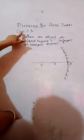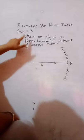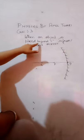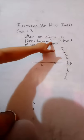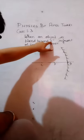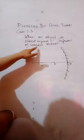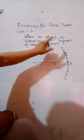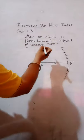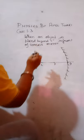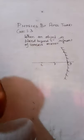Now I will tell you the third case. When an object is placed beyond center of curvature, beyond C, in front of a concave mirror. You can also get the question like this: if an object is placed between center of curvature and infinity.